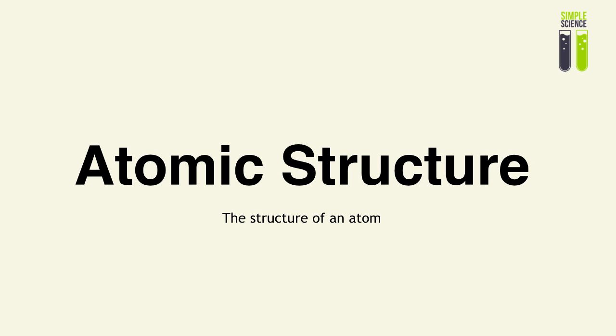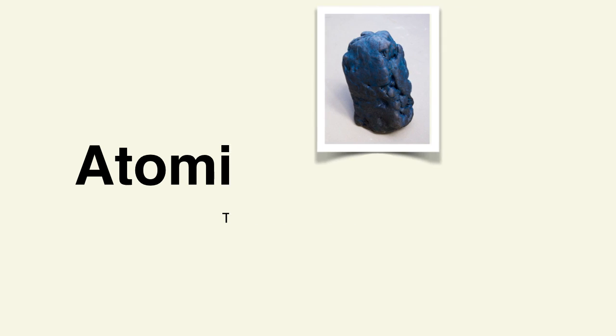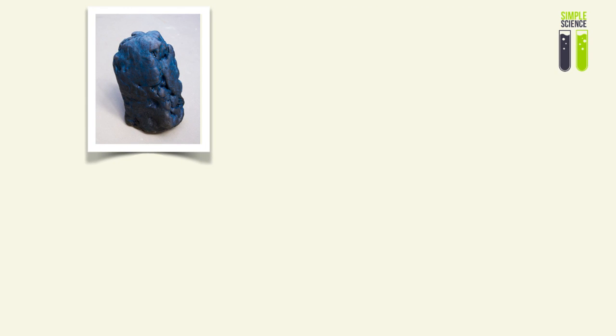So in the first video in our Chemistry IGCSE series, we are going to be looking at the structure of an atom. So what do we know about a substance? A pure substance is made up of a particular element. A particular element is characteristic of that substance.